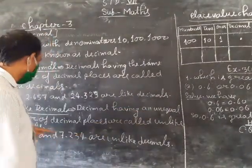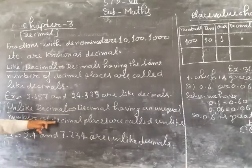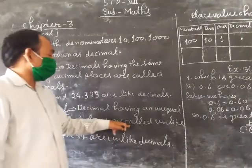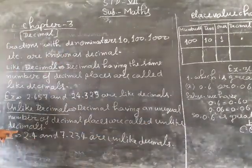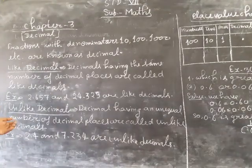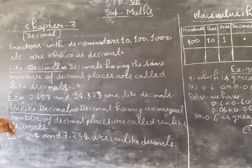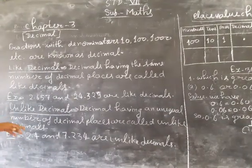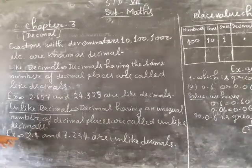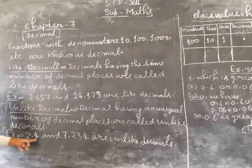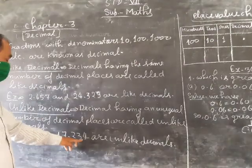Decimals with an unequal number of decimal places are called unlike decimals. Example: 2.4 and 7.234 — these are unlike decimals.